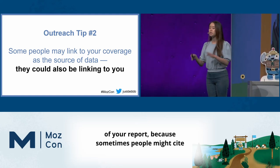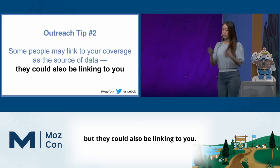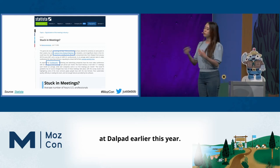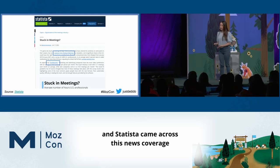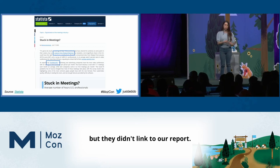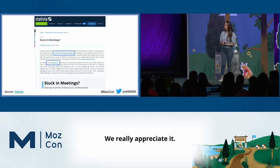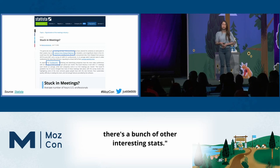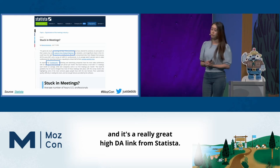Second is also to monitor the links to the news coverage of your report, because sometimes people might cite that news coverage as the original source of data, but they could also be linking to you. An example: a report I did at Dialpad earlier this year — Tech Republic did news coverage on our report, and Statista came across this news coverage and linked to it, but they didn't link to our report. So I reached out and said, 'Hey, thank you so much for mentioning our report. I noticed you didn't link to it, and you only covered one stat — whereas our report has a bunch of other interesting stats.' And we were able to get a link that way — a really great high DA link from Statista.